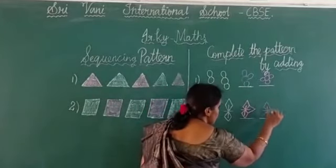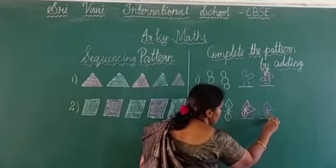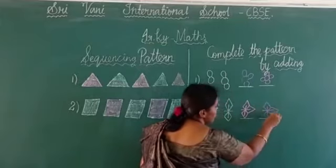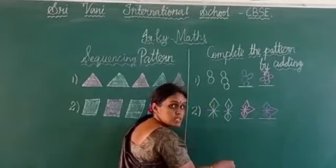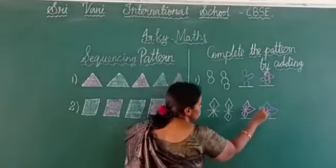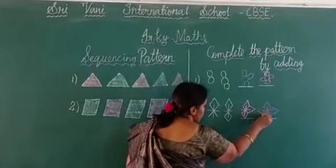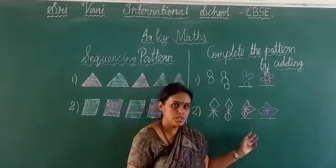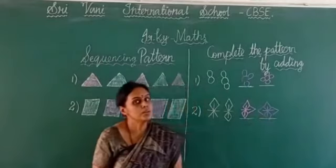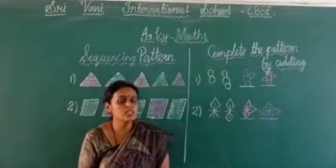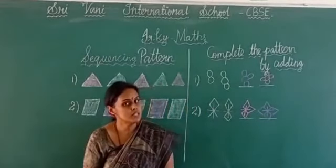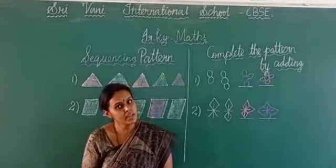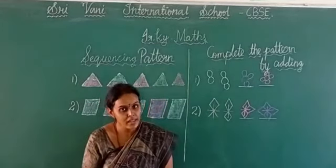Up arrow, down arrow, and right arrow. We are going to complete the star by adding the left arrow. Okay children, do you all understand this? Yes. Okay, please do practice alone. Answer in the video. Bye, take care, thank you.